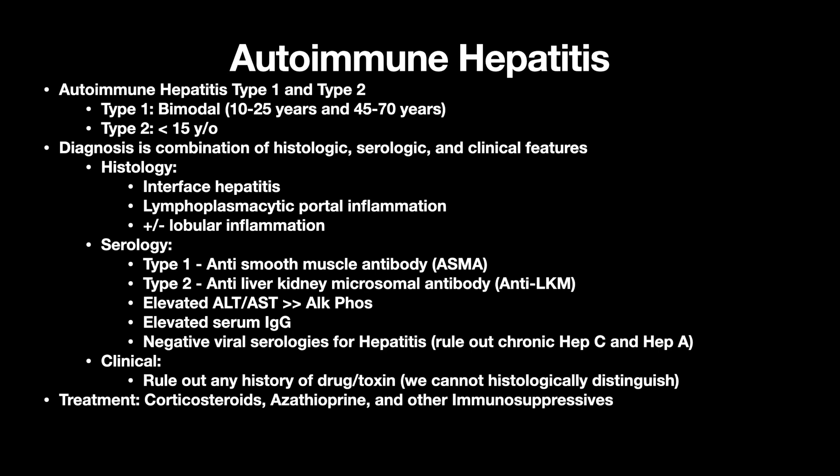It's hepatitis — the hepatocytes are being attacked — so you'll have elevated ALT and AST more than your ALK-phos. You'll have elevated serum IgG and negative viral serologies, since you want to rule out chronic hepatitis C and hepatitis A, which can mimic autoimmune hepatitis histologically. Clinically, rule out any history of drugs or toxins. Treatment is corticosteroids, azathioprine, and other immunosuppressives.